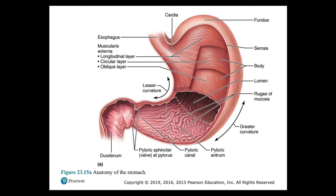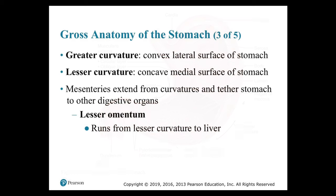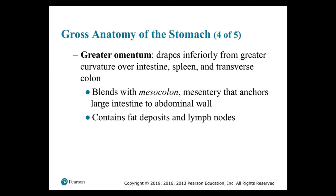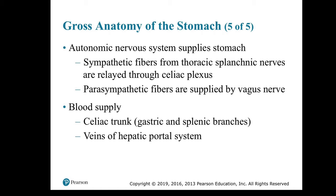Also note the lesser curvature and greater curvature of the stomach. The greater curvature is the convex lateral surface; the lesser curvature is the concave medial aspect. Mesenteries extend from the curvatures: the lesser omentum runs from the lesser curvature to the liver, and the greater omentum drapes inferiorly from the greater curvature over the intestine, spleen, and transverse colon, blending with the mesocolon. The autonomic nervous system supplies the stomach — sympathetic fibers from the thoracic splanchnic nerves via the celiac plexus inhibit digestion, while parasympathetic fibers via the vagus nerve activate digestion.